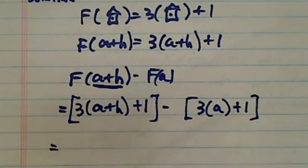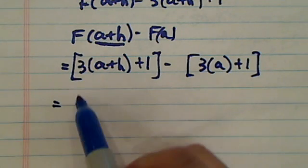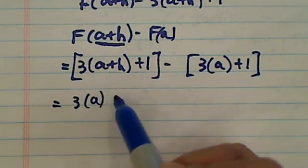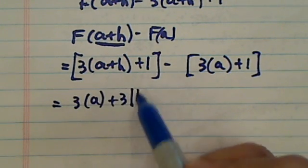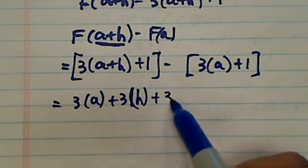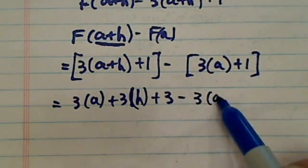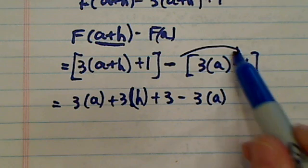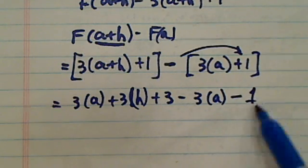So let's simplify from here. 3 times a plus 3 times h plus 3 minus 3a. Now this minus sign needs to be distributed in there, so you've got to change sign over here.